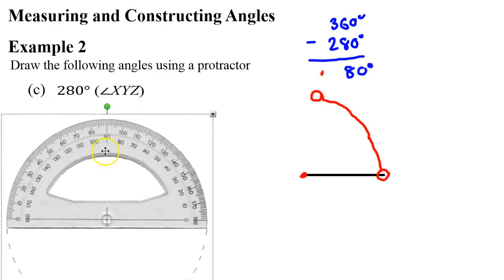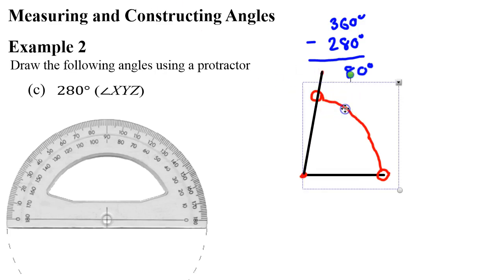Then move our protractor out the side. Just like last time, we're going to connect it with a nice straight line, like so. Let's also neaten this one up as well.